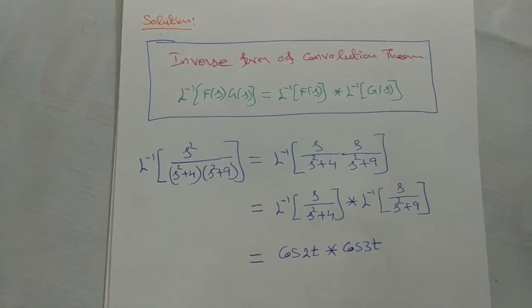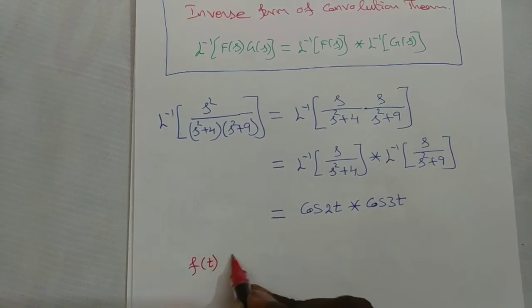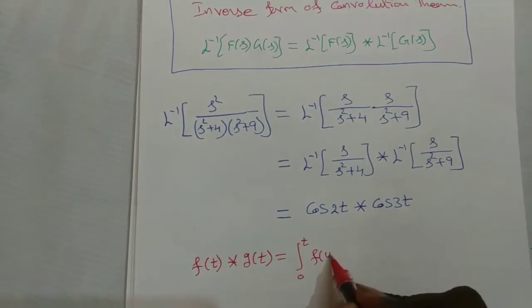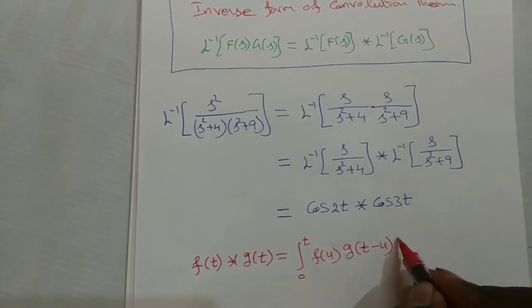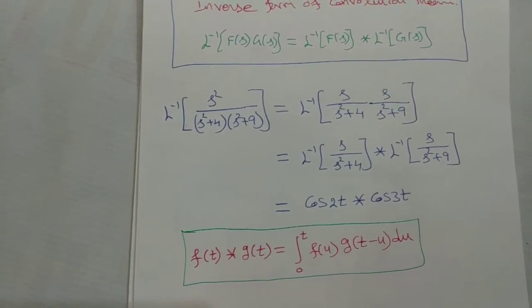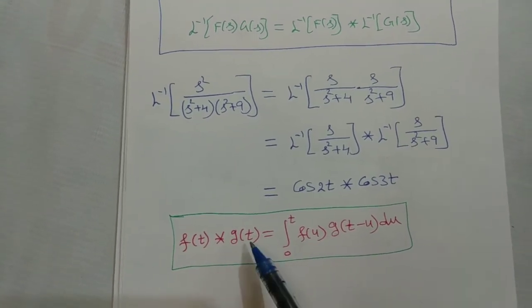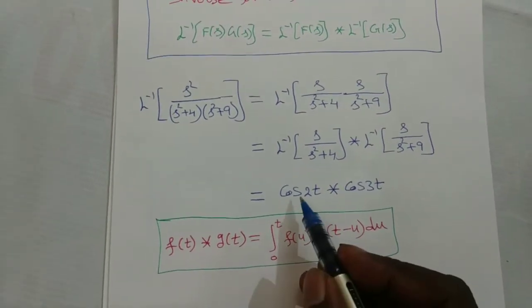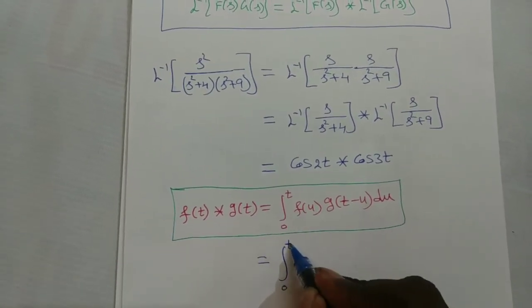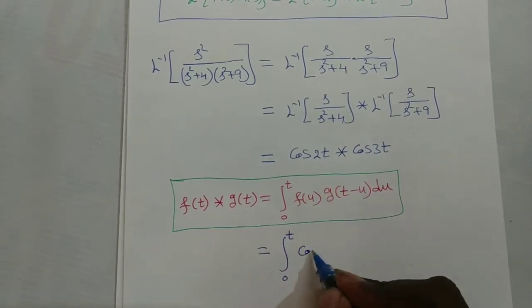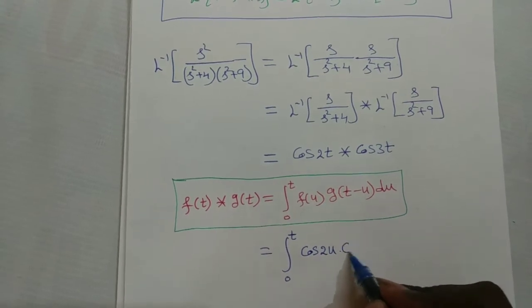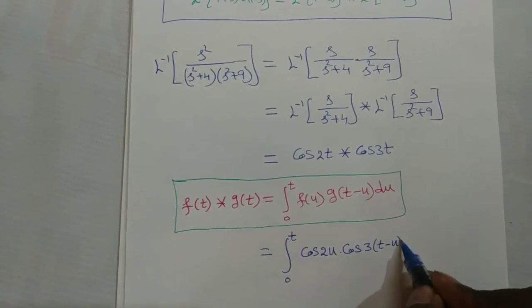Now apply the convolution of two functions. The formula is: f(t) star g(t) equals integral from 0 to t of f(u) into g(t minus u) du. The first function has t replaced by u, and the second function has t replaced by t minus u. So here: integral from 0 to t of cos(2u) into cos(3(t minus u)) du.